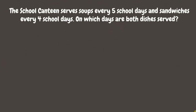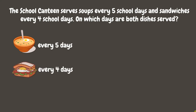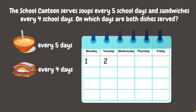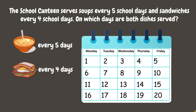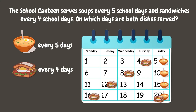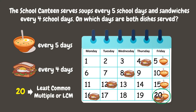The school canteen serves soups every 5 school days and sandwiches every 4 school days — on which days are both dishes served? Assuming the school canteen is open from Monday to Friday, soups are served every 5 days and sandwiches are served every 4 days. We can see that both soups and sandwiches are served on the 20th day of school. In this case, 20 can be referred to as the Least Common Multiple or LCM of 5 and 4.